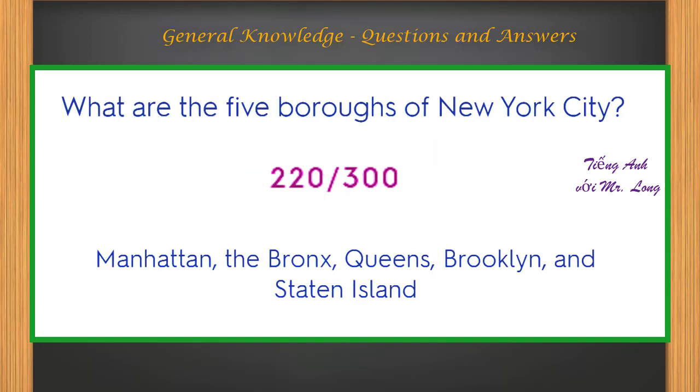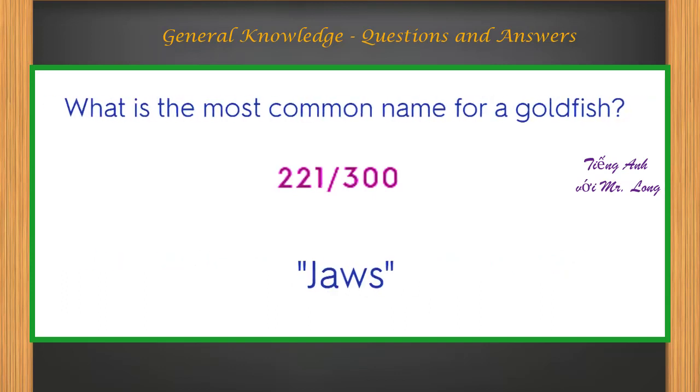What are the five boroughs of New York City? Manhattan, the Bronx, Queens, Brooklyn, and Staten Island. What is the most common name for a goldfish? Jaws.